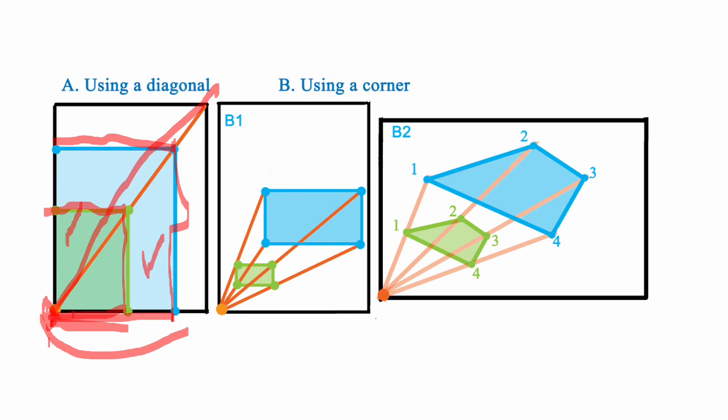Now, you can use this, for example, to reproduce, let's say, this green rectangle by connecting its corners to the corner of the paper and then extending these lines out.